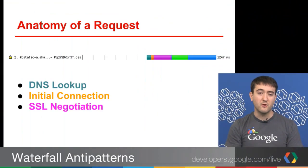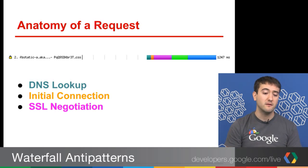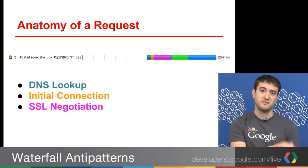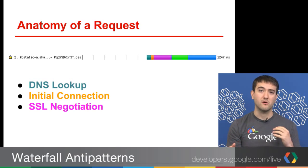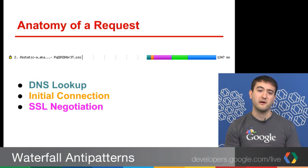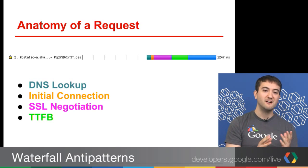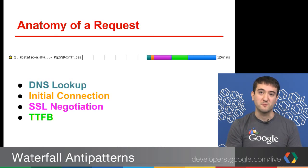Next is SSL negotiation, which goes hand in hand with that padlock icon. SSL negotiation is ensuring that you can communicate securely with the server. So just to recap: we've established the address of the server, we've made a connection to that server, and now client and server are going to come up with an agreement about a secure channel of communication. All of this is happening before the server has even done anything with what we're trying to request. None of this so far has had anything to do with CSS — and so that's what TTFB, or time to first byte, does.